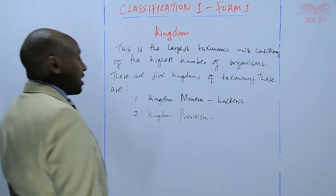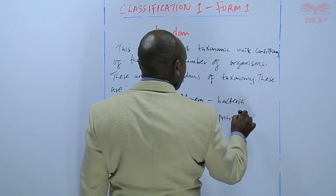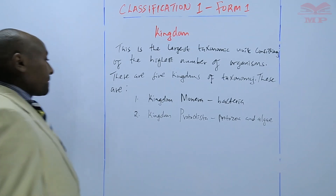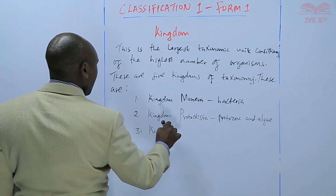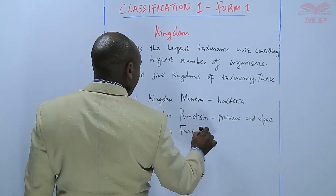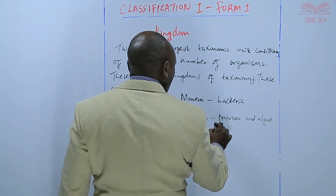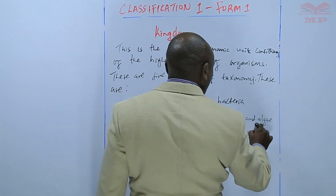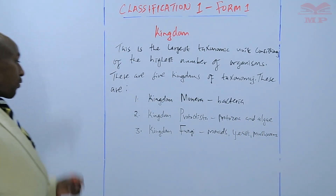The second kingdom is kingdom Protoctista. In this kingdom we have protozoa and algae. Number three, we have kingdom Fungi, and here we have the different types of fungi, for example the molds, the yeast, and the mushrooms.